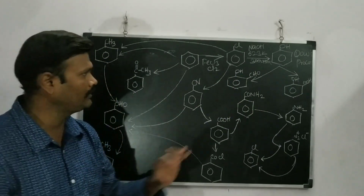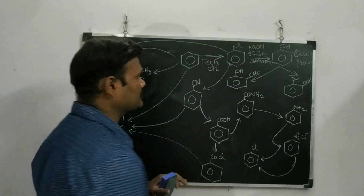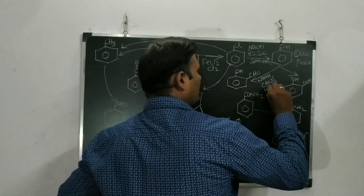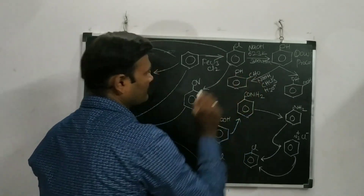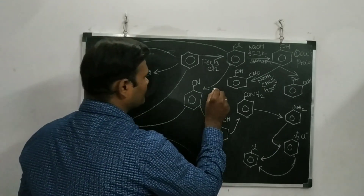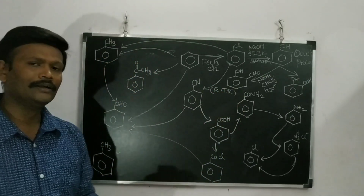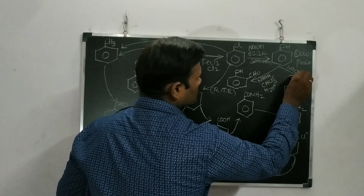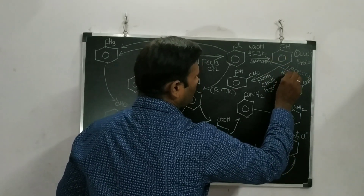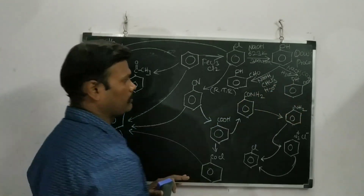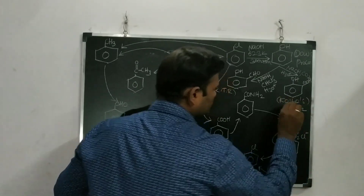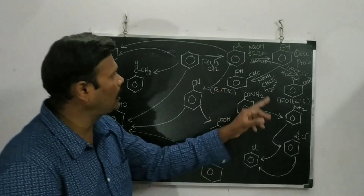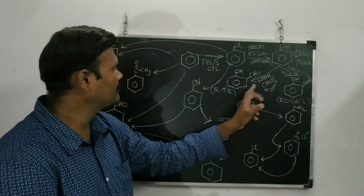From phenol, we can obtain salicylaldehyde using NaOH and CHCl3 followed by hydrolysis. This reaction is called the Reimer-Tiemann reaction. Similarly, using NaOH along with CO2 followed by hydrolysis, we get salicylic acid. This reaction is called the Kolbe reaction — from phenol to salicylic acid.